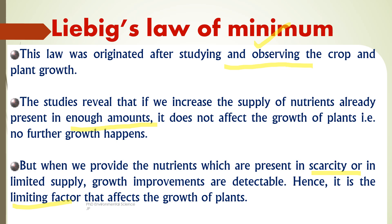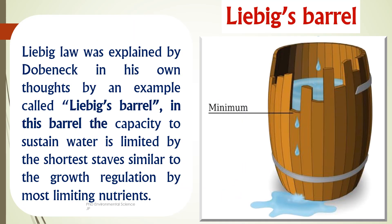This principle is applicable in agriculture, where farmers must identify and supply the limiting nutrients to enhance crop yields. Liebig's barrel is a visual representation of the law of the minimum, proposed by Justus von Liebig. In this barrel analogy, each stave or wooden plank of the barrel represents a different nutrient or resource necessary for growth — for example, nitrogen, phosphorus, potassium, water, and sunlight. The staves are of varying heights, indicating the different levels of availability of each nutrient or resource.